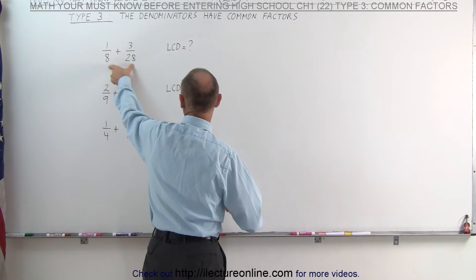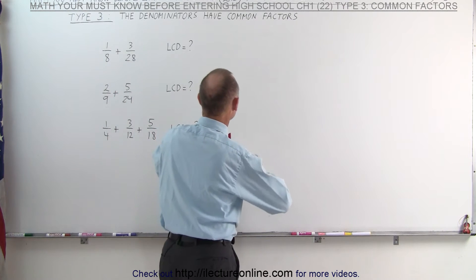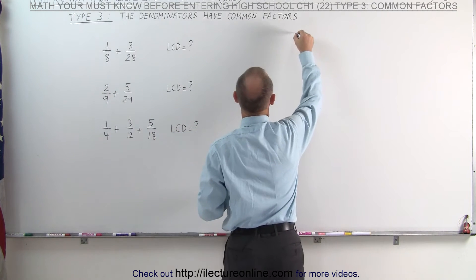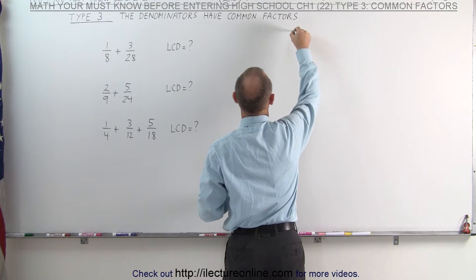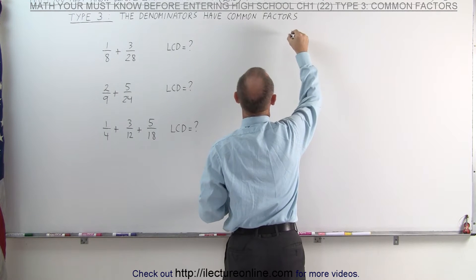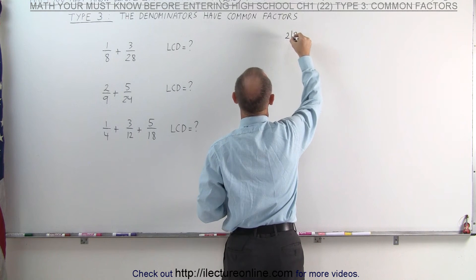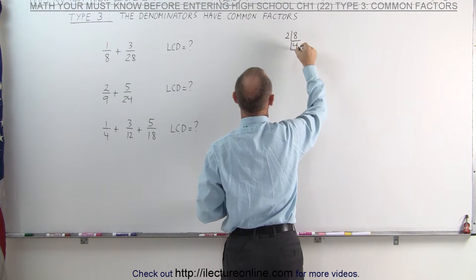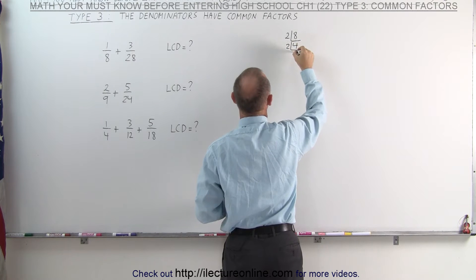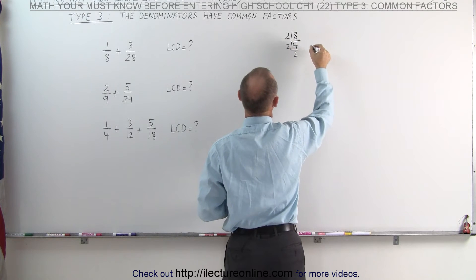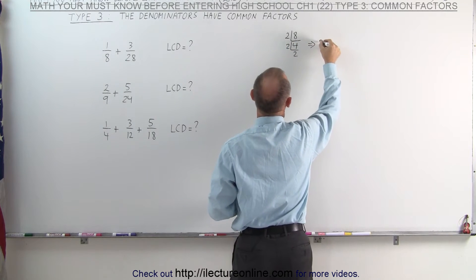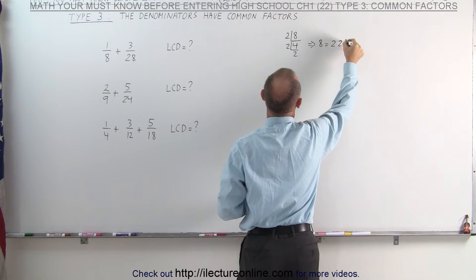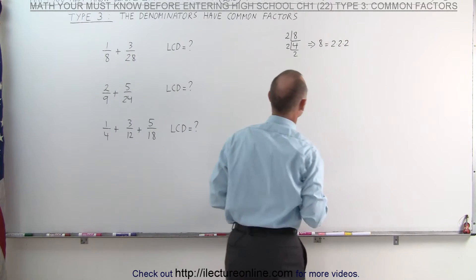We'll take the first two fractions right here. We take the first denominator, 8, and we divide it by the lowest prime number, 2, which gives us 4. We can divide that by 2, which gives us 2. In other words, 8 can be written as 2 times 2 times 2.